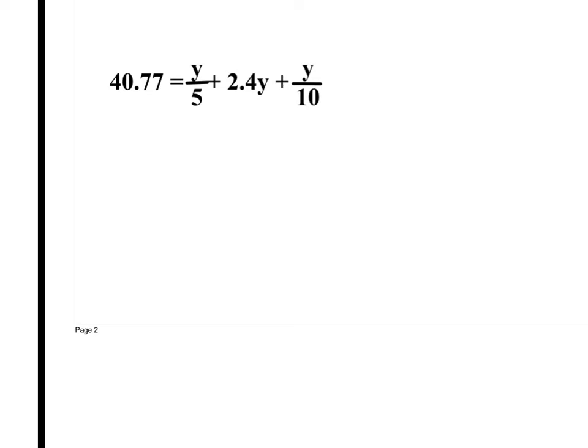All right, we have 40.77 is equal to y divided by 5 plus 2.4y plus y divided by 10. Now what I want to do is I want to combine like terms, but I can't do that until I get them to where they're all the same fractions because these are unlike fractions and we can't add unlike fractions. What I want to do, my goal, is to get rid of the fractions. And I do that by timesing everything by the same number that will get rid of these fractions.